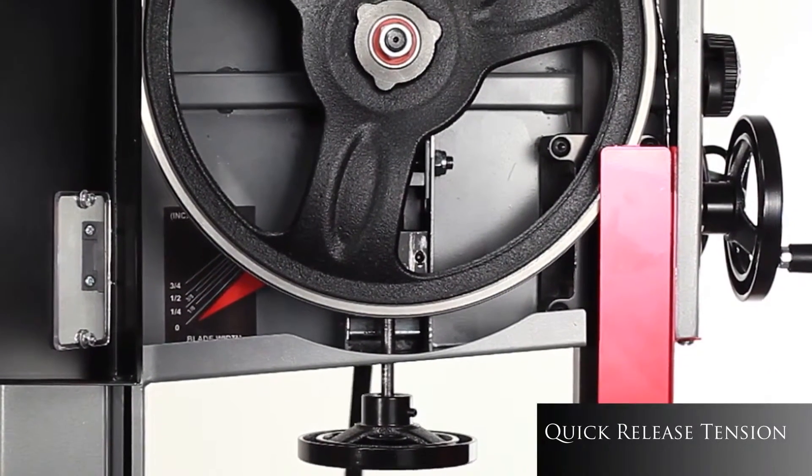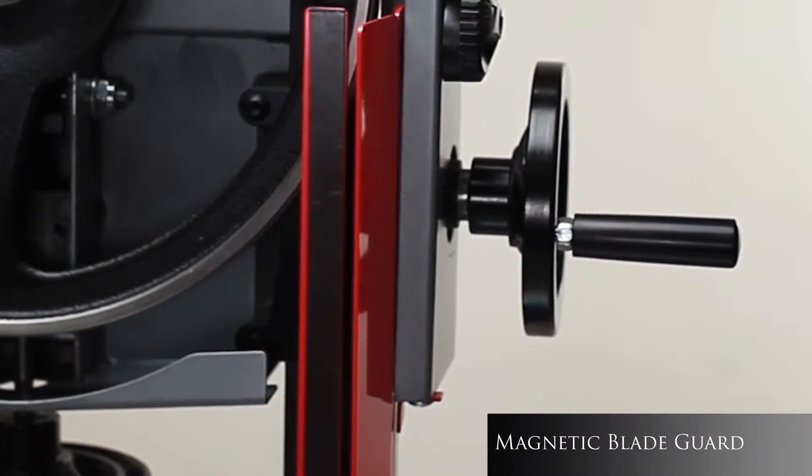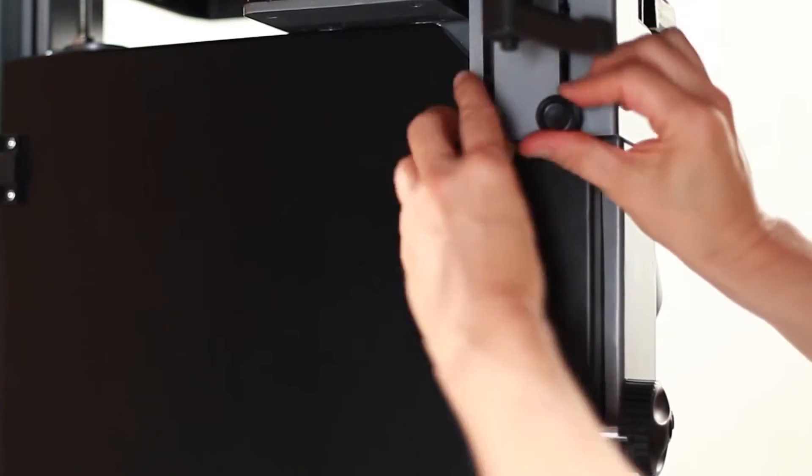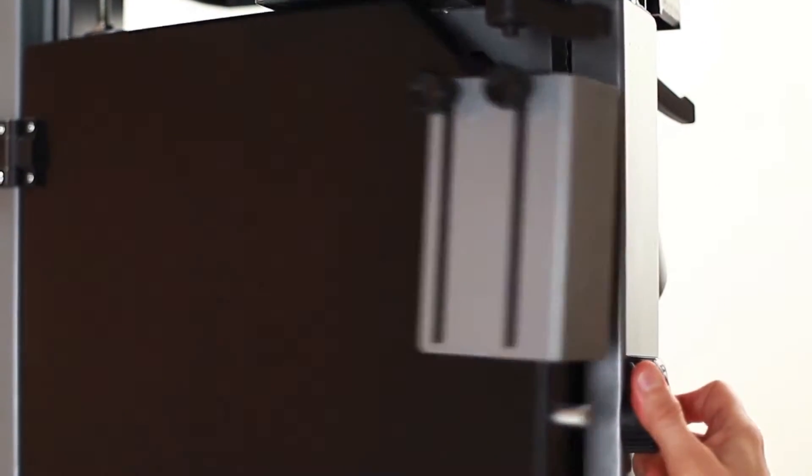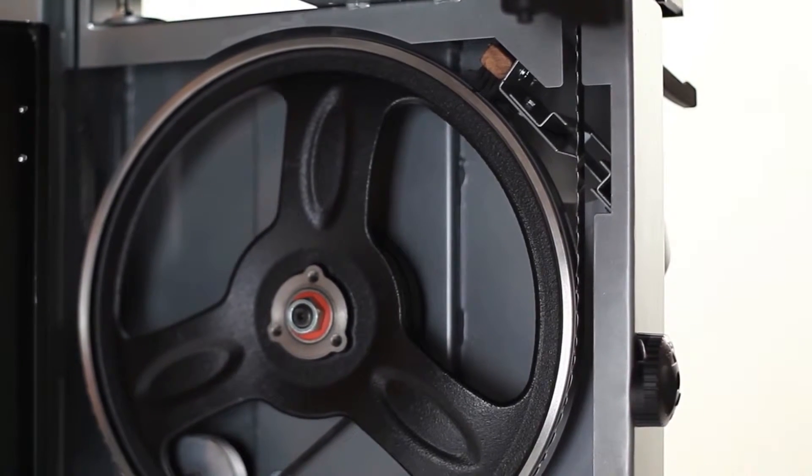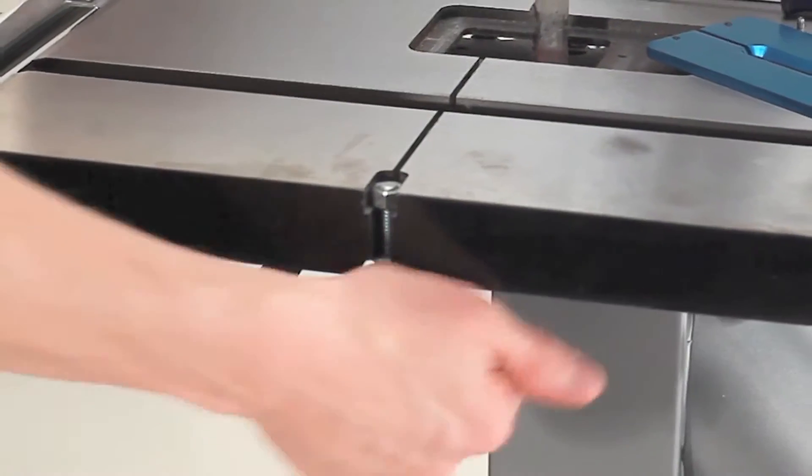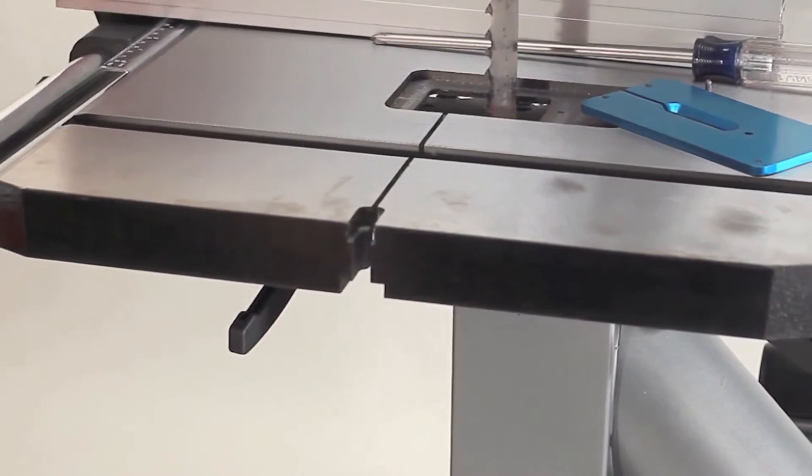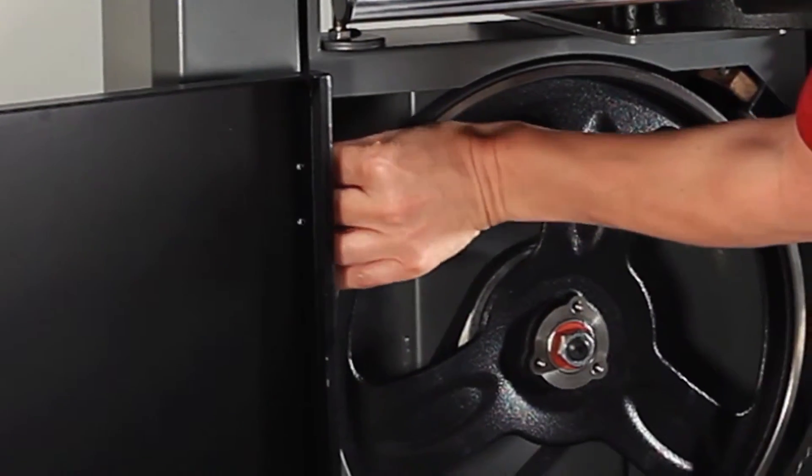Release the tension. Open the magnetic guard. Drop down the guard cover to open the lower door. Remove the table lock, and carefully remove the blade.